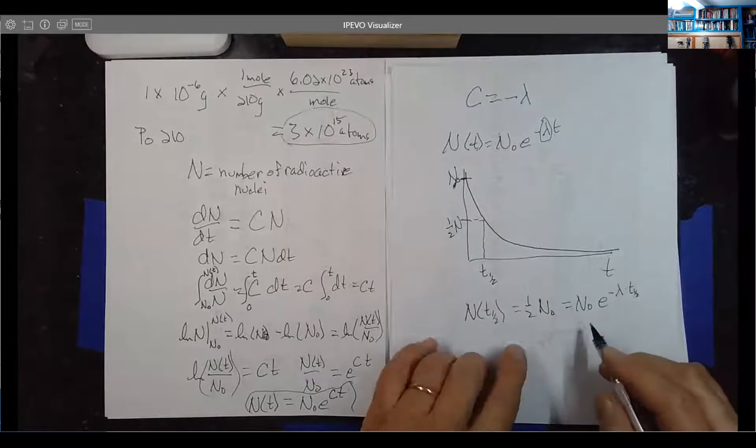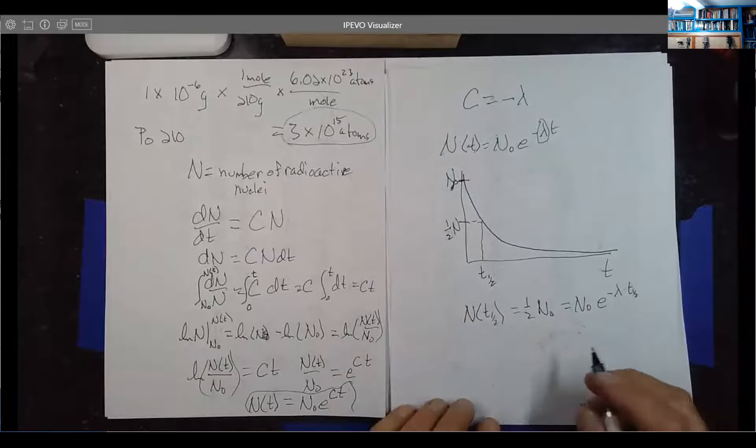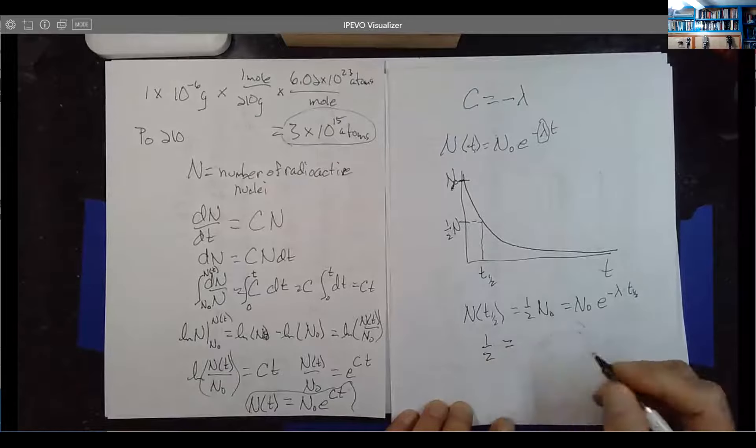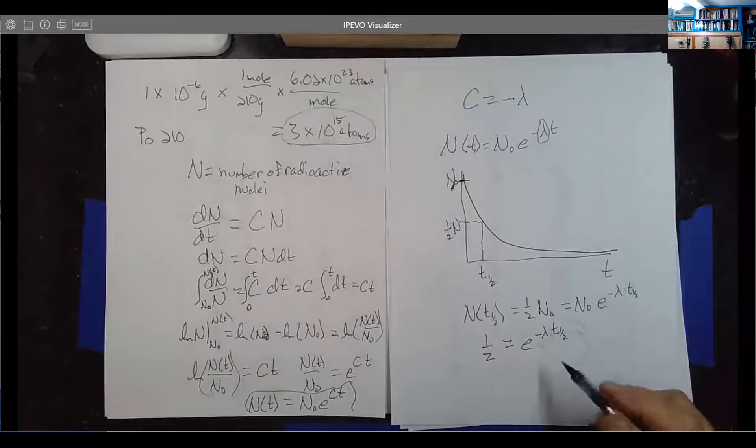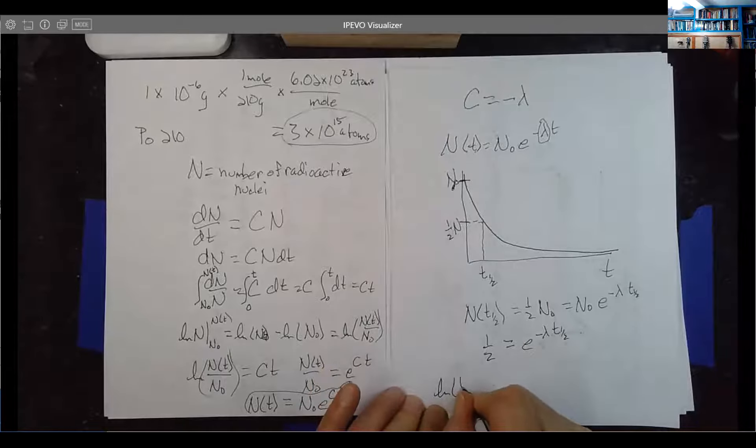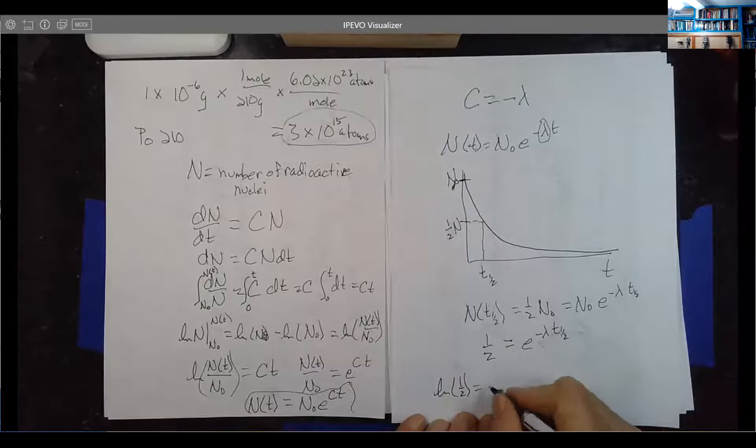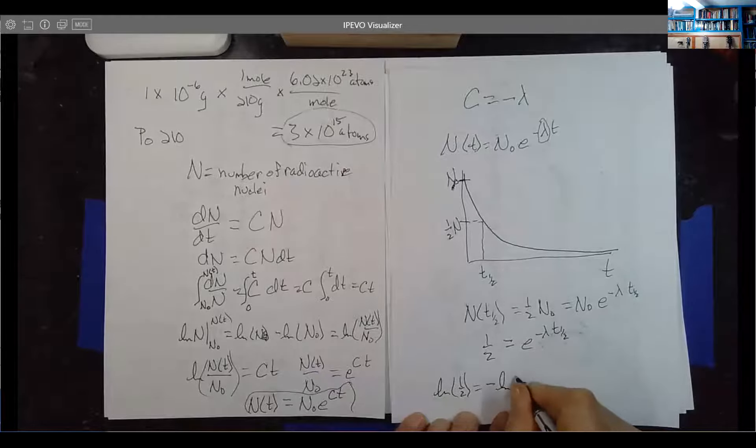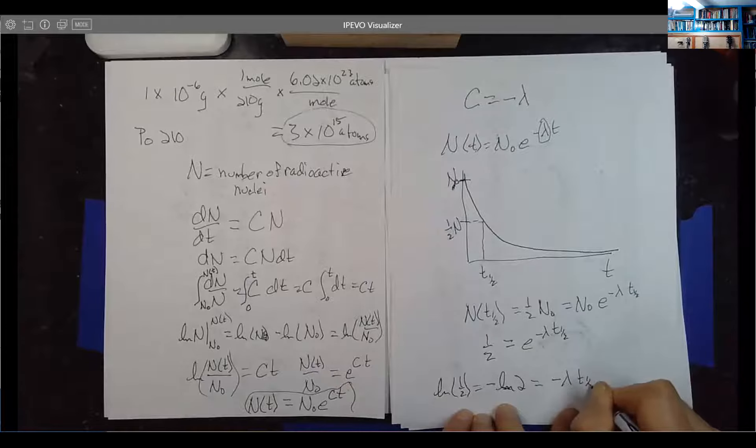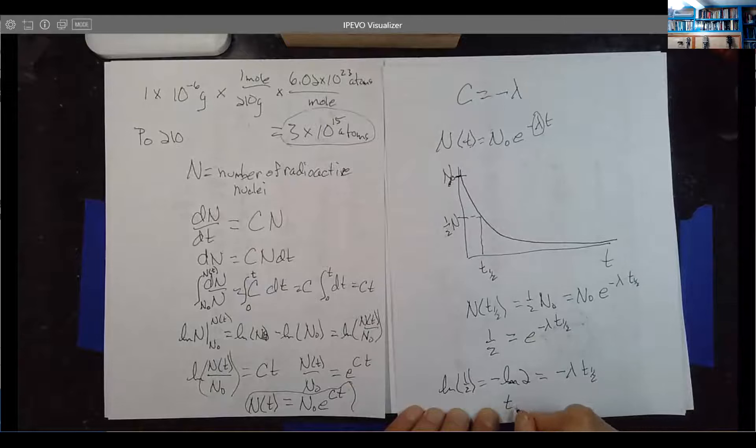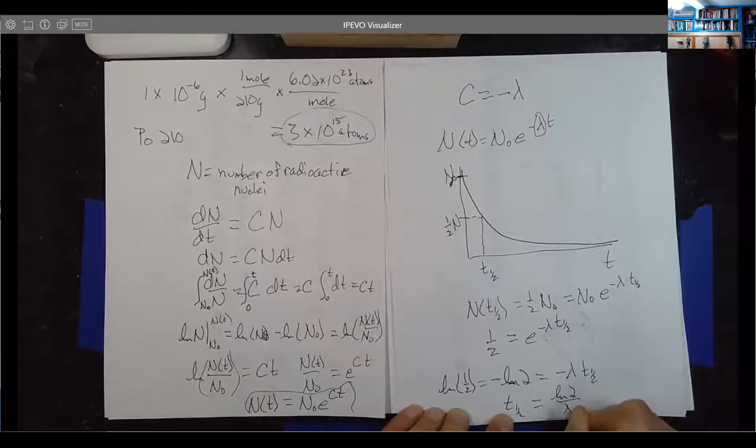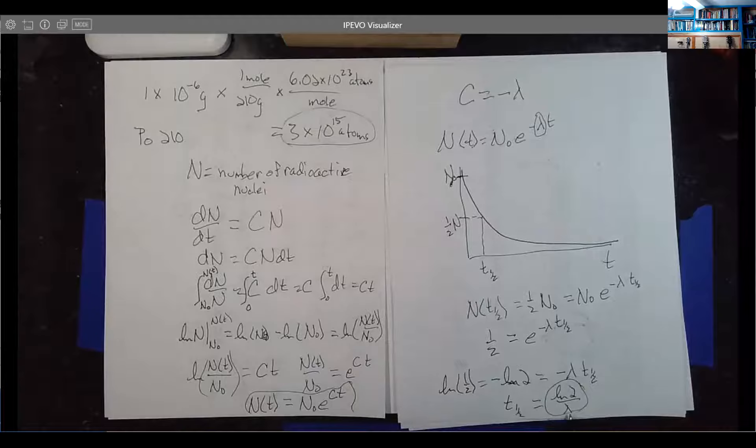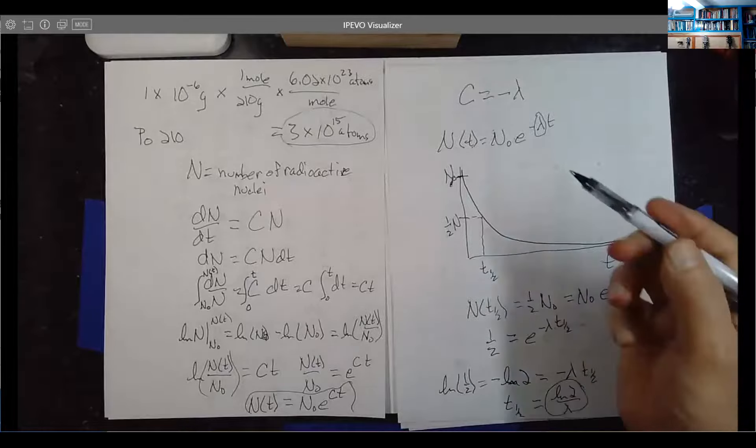You can play around with this thing. There's an N₀ on each side, so you can divide that out. You get 1/2 = e^(-λ T₁/₂). If you take the natural log of both sides, ln(1/2) with a little bit of logarithmic trickery ends up being minus ln(2). And that'll be -λ T₁/₂, or the half life is going to be ln(2) divided by lambda. So if we can figure out that term lambda, we can figure out the half life from the data that we have.